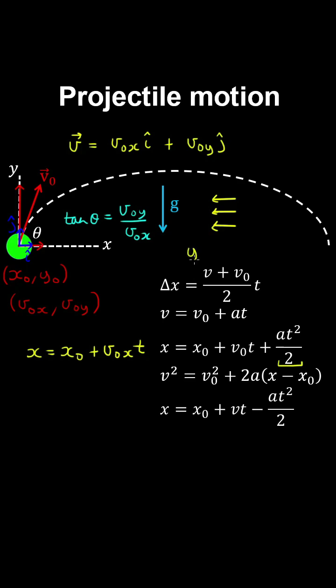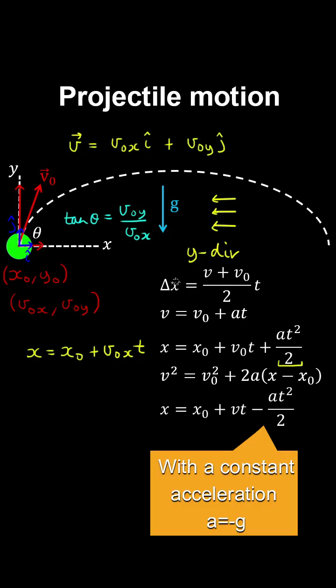In the vertical direction, we have the same kinematic equations that we've derived previously for 1D motion. We can replace the x's with y's and the velocity component will be in the y direction.